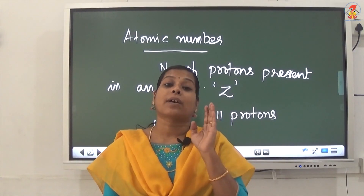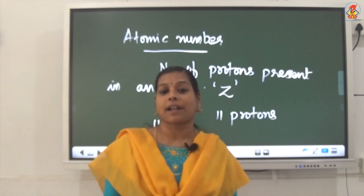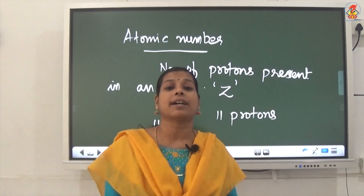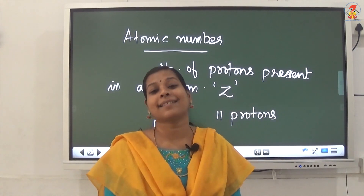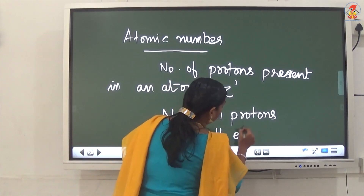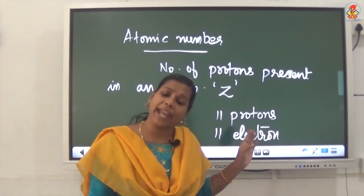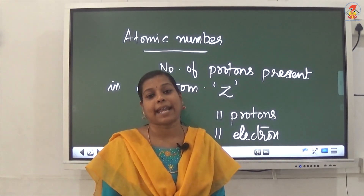The atom of sodium contains 11 protons, and you know the atom is electrically neutral. That means the number of protons and number of electrons are equal. So can you say how many electrons are in sodium? Yes, it is 11. So if you know the number of protons, you can find the number of electrons.